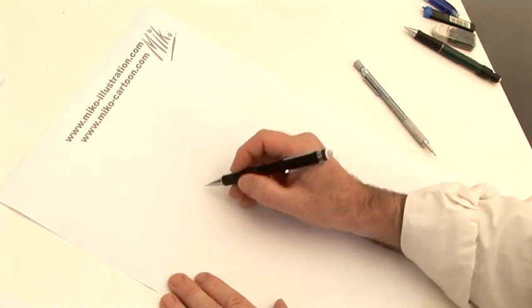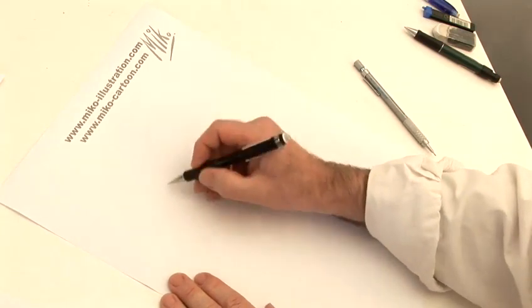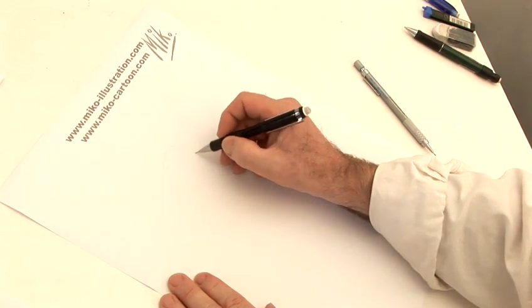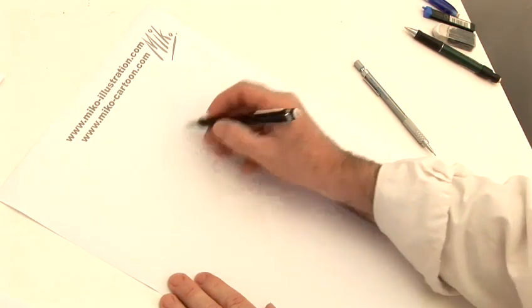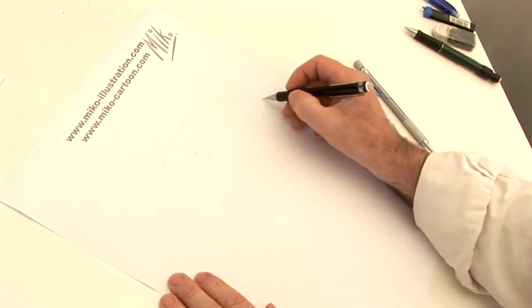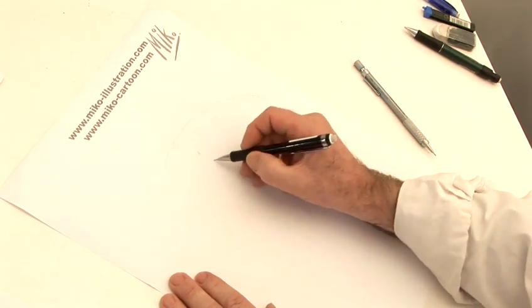Now I'm going to show you how to draw a toucan. He's an amazing bird with that huge beak. That's the first thing to draw, of course. Fantastic beaks.